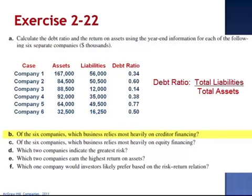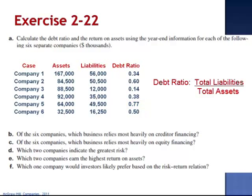Question B asks: of the six companies, which business relies most heavily on creditor financing? When we look at the ratios, the highest ratio is Company 5. $0.77 of every dollar of assets is owned by non-owners, the creditors.